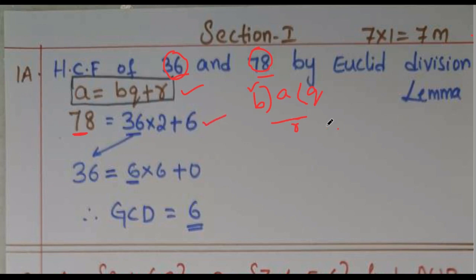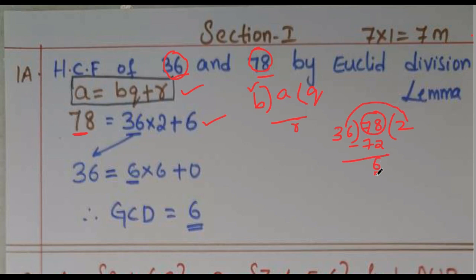Whenever there are two numbers, take the bigger number. Write 78 as 36 into 2 plus 6. Here, 36 twos are 72, and 78 minus 72 is 6. So 78 equals 36 into 2 plus 6, which follows the division rule.